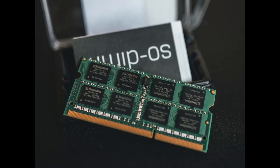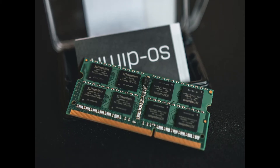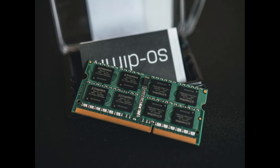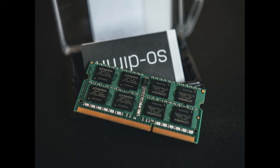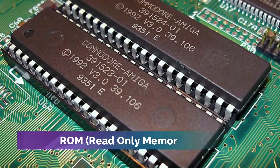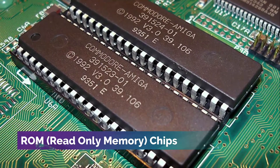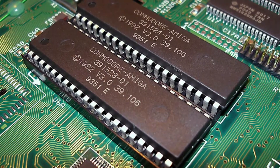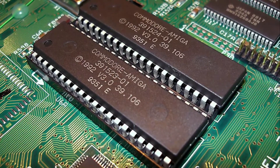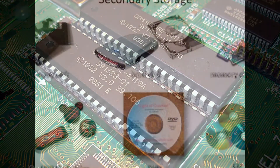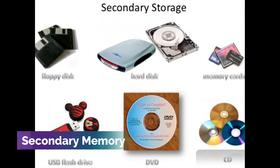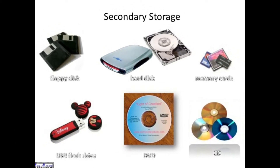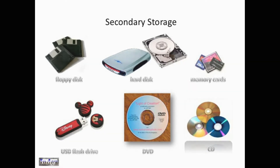RAM can remember a lot of things and can change or process information, but once the computer is turned off, the data stored in it will be erased. ROM or read-only memory is also known as permanent memory because the information saved in it cannot be changed or erased. Secondary memory is also called a backup device because it supports the main memory. You can save data and information in it for future use.